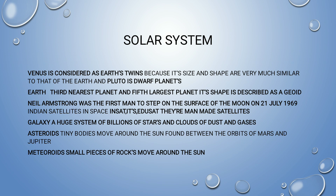The first Indian satellite was Aryabhatta. Some examples of Indian man-made satellites include INSAT, EDUSAT, and IRNSS-3D, unlike the Moon which is a natural satellite. A galaxy means a huge system of billions of stars and clouds of dust and gases — the Milky Way is an example of a galaxy.